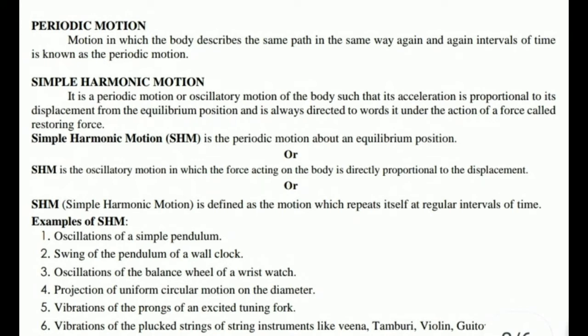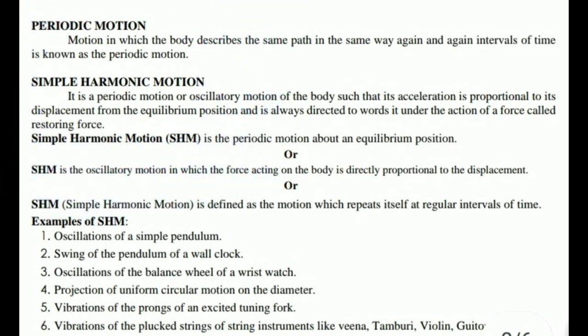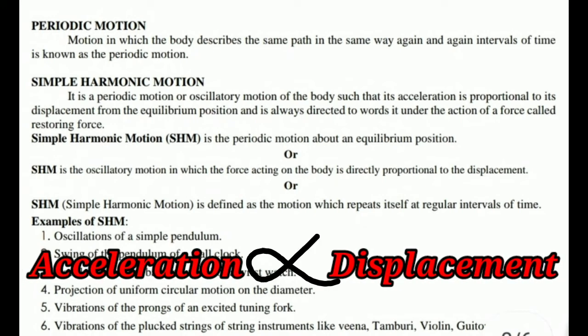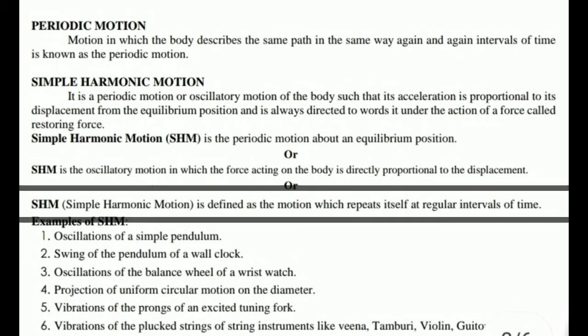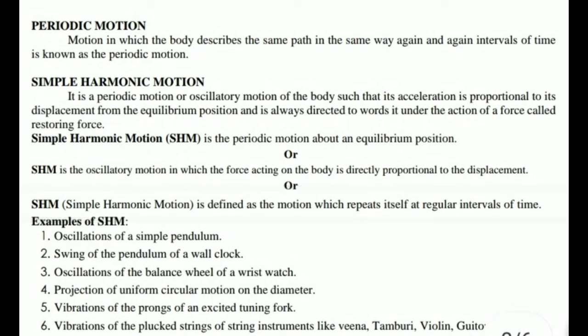Within oscillation, we have two types: SHM and non-SHM. Simple harmonic motion is an oscillatory motion in which the force acting on a body is directly proportional to the displacement. Another definition: SHM is motion that repeats itself at regular intervals of time. Examples of SHM include a simple pendulum, the pendulum of a wall clock, and a wristwatch.